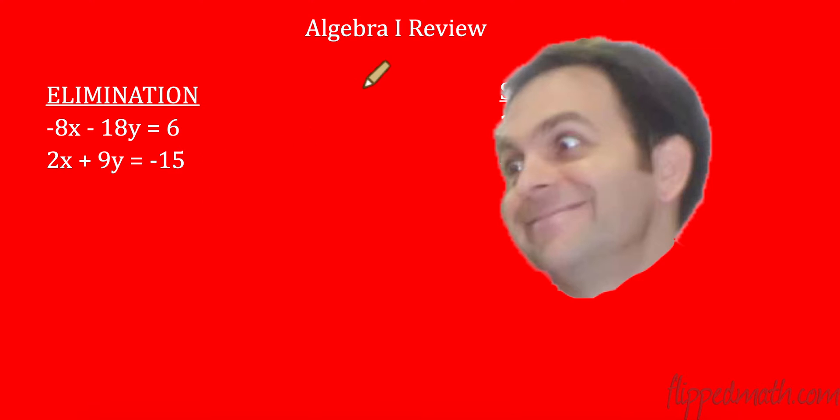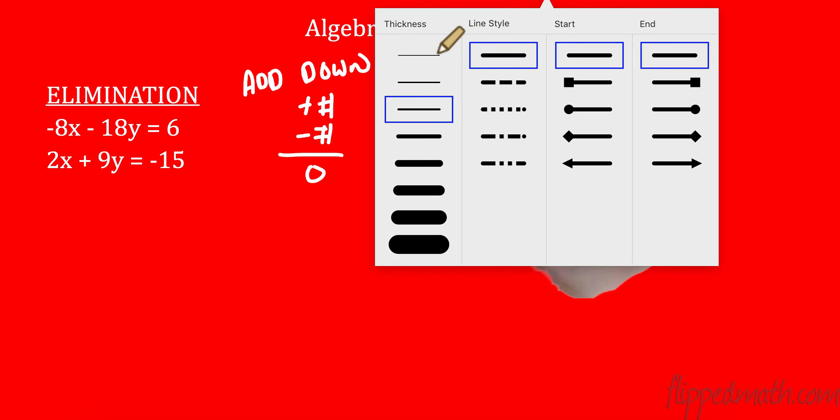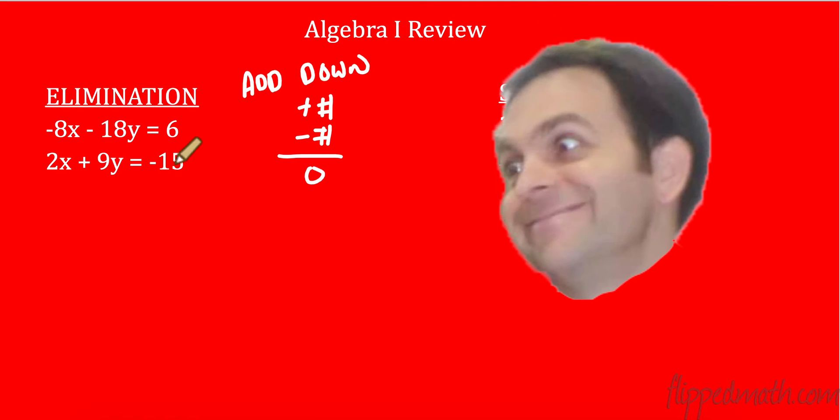And remember, when we Eliminate, we are going to add down. We're going to add down. So we want to eliminate by having the positive of a number and the negative of a number because that is going to give us zero. So make sure you understand that. We're going to add down when we do this. All right, here we go. Let's try one.